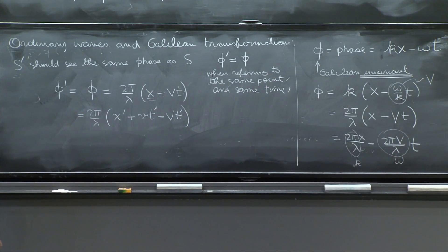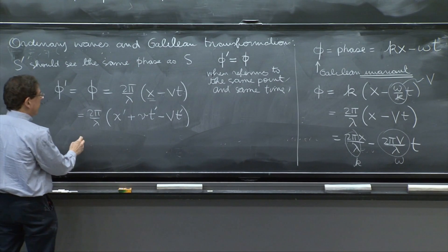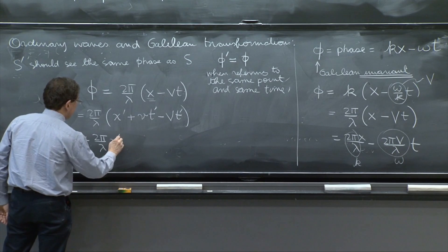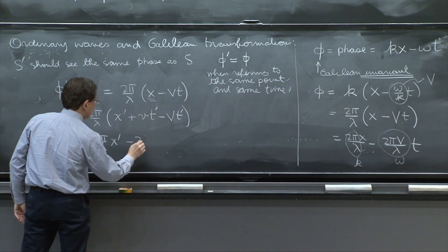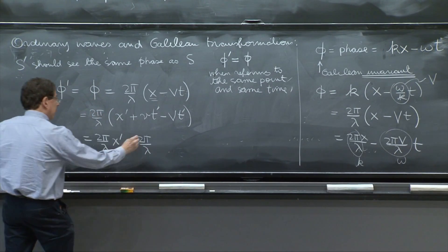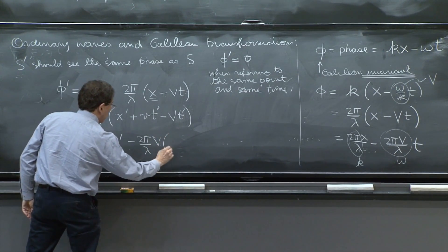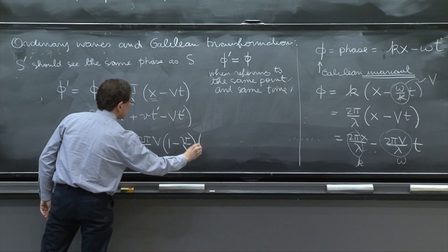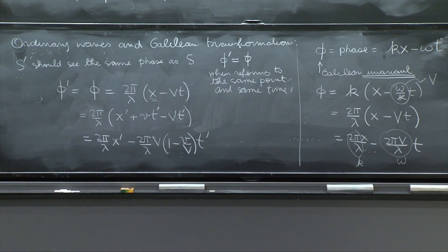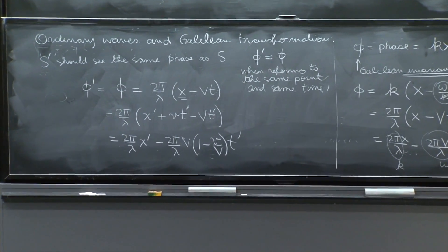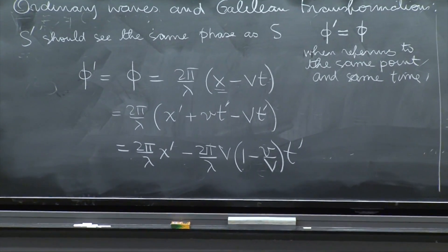So we can rewrite this as 2 pi over lambda x prime minus 2 pi over lambda v times 1 minus little v over capital V times t prime. I think I got the algebra right. 2 pi over lambda. Yes, I grouped those two terms and rewrote it that way.